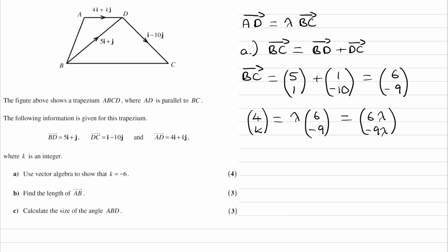And I can then equate the i components, so 4 is equal to 6 lambda. Equate the j components, so K is equal to minus 9 lambda. And then I can solve simultaneously. So from this, I get lambda is equal to 4 over 6, or 2 over 3. I can then put that into this equation for K, minus 9 times 2 over 3, and that would be minus 6.